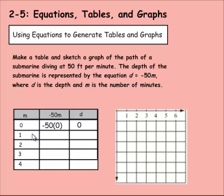Here we have one minute has passed, so it would be negative 50 times one. So after one minute, if you're doing 50 feet per minute, it would be negative 50. Here we have two minutes have passed, so it would be negative 50 times two. And that would give us negative 100. Remember, a negative and a positive makes a negative. Here we have three times negative 50, so negative 50 times three, and that would give us negative 150. Here we have negative 50 times four now, and that would give us an answer of negative 200.